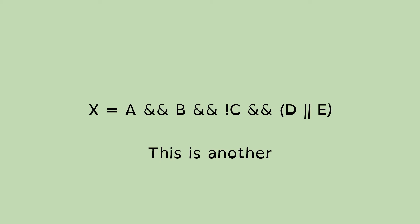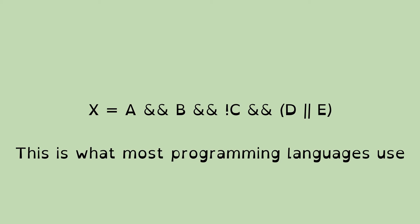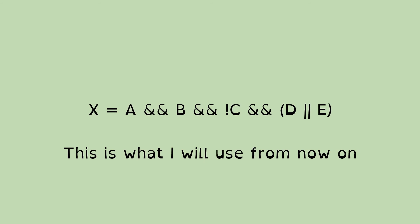And finally, one more way of representing this: we've got a double ampersand sign for and. We've got a double upright bar symbol for or, and we've got a single exclamation mark before a letter to indicate not. This is what most programming languages use for Boolean logic when you're manipulating Boolean variables. And so in fact, this is what I will be using from now on.